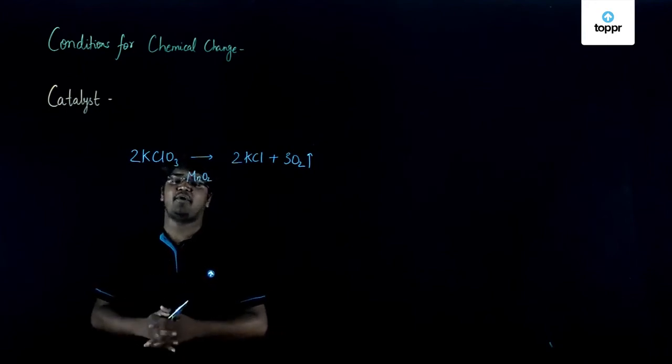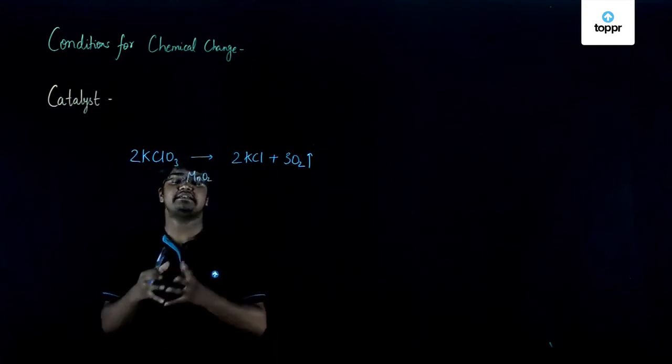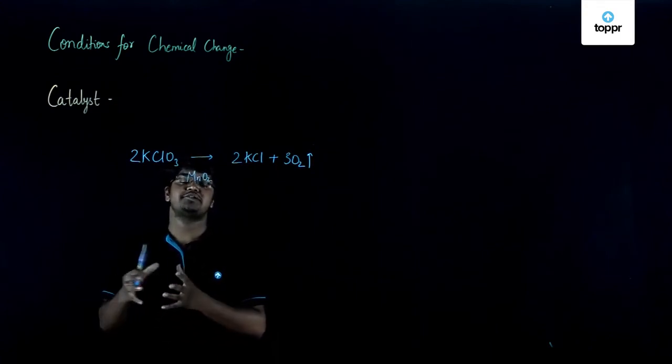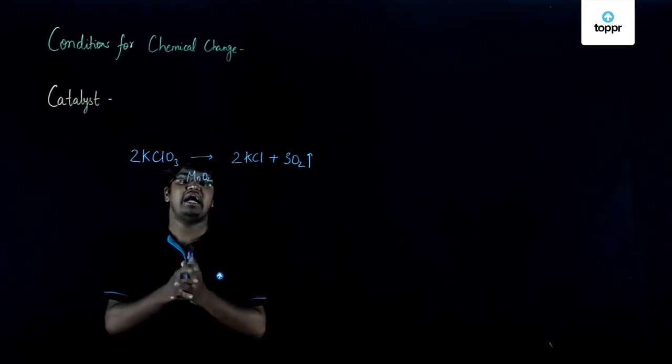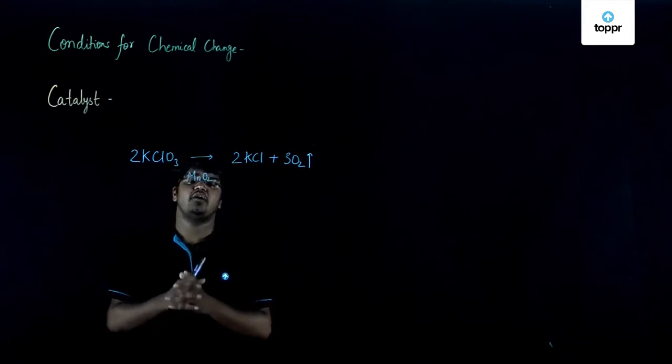Based upon their action, catalysts can be of two types: positive catalysts that increase the rate of reaction are also known as catalytic promoters, and those which decrease the rate of reaction are known as catalytic inhibitors.